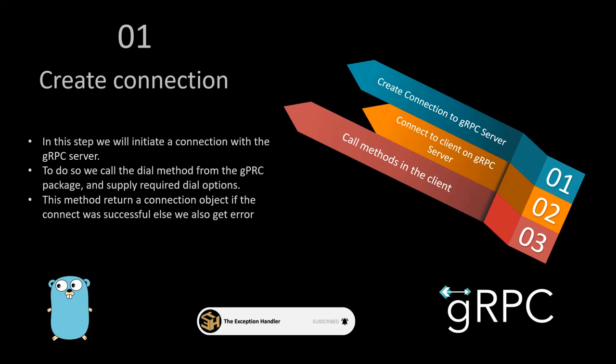To create a gRPC client — often referred to as a gRPC stub — you just need a connection to your existing gRPC server, also referred to as a gRPC channel. To create this gRPC channel, you call the grpc.Dial method, passing in the URL and port number of the server where your gRPC server is executing, followed by optional dial options which contain settings like authentication.